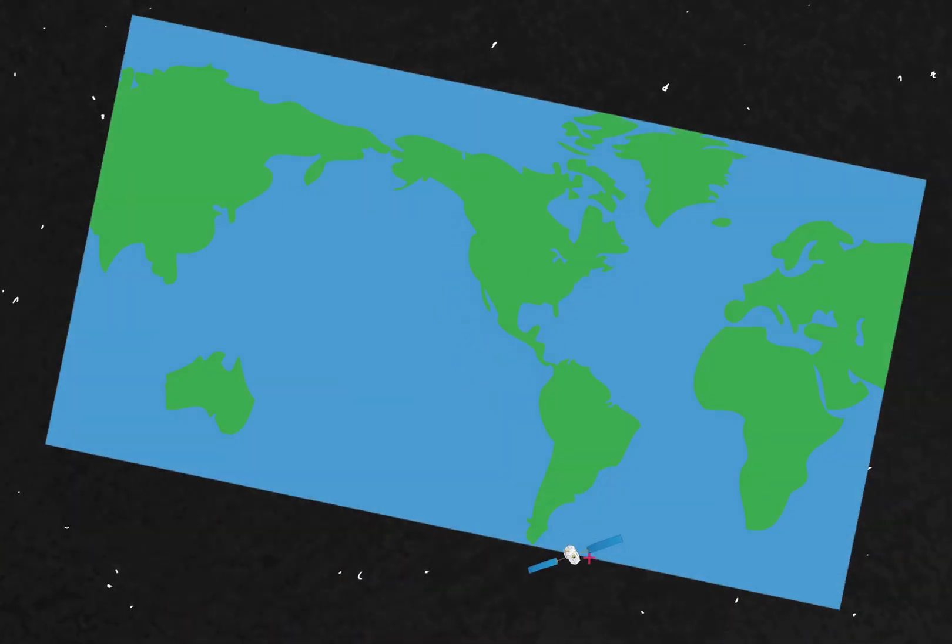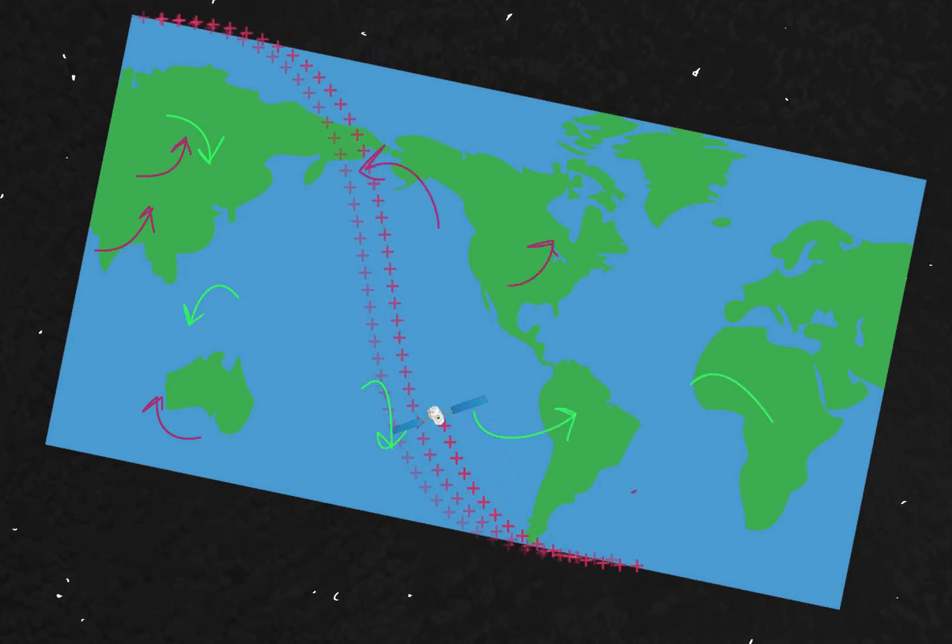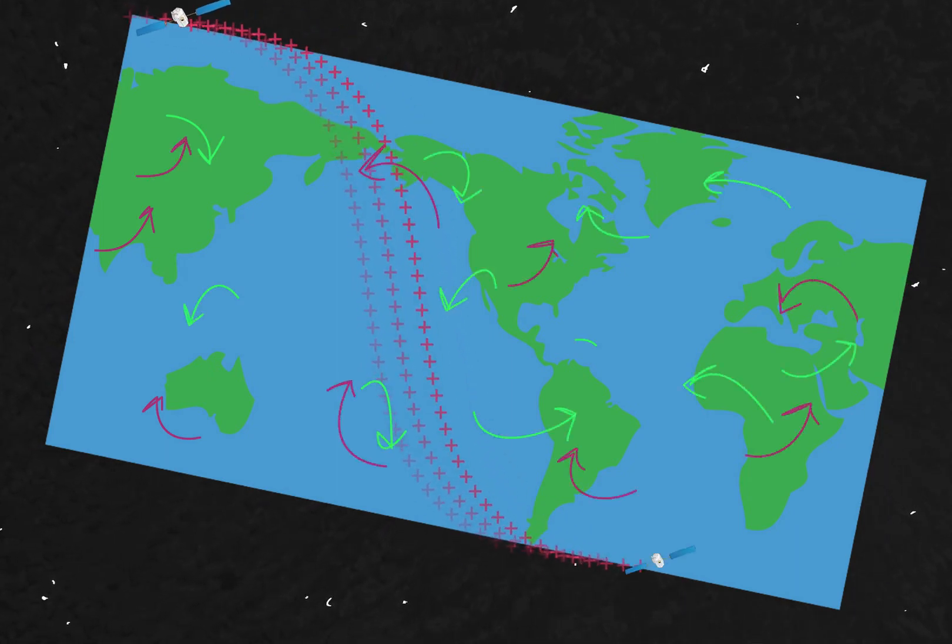As OCO-2 orbits the Earth each day, it will make hundreds of thousands of CO2 measurements. This high measurement density will give us far more information about where and how CO2 is traded between sources and sinks.